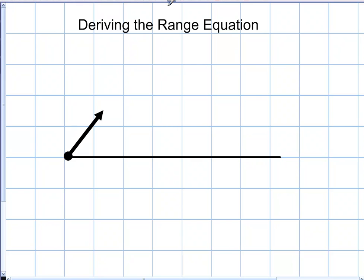We've now taken a look at the kinematics equations and what you need to do to begin to solve them. In essence, you need to have three variables to begin to work through them, and once you have three variables you can solve for all of the variables. But what I'm going to look at now is a situation where you're not going to directly have three variables — you're indirectly going to have them.